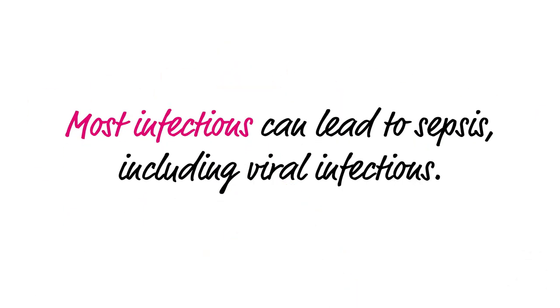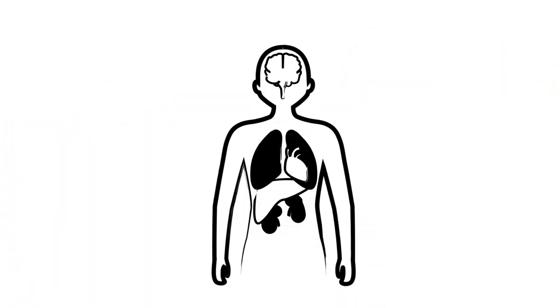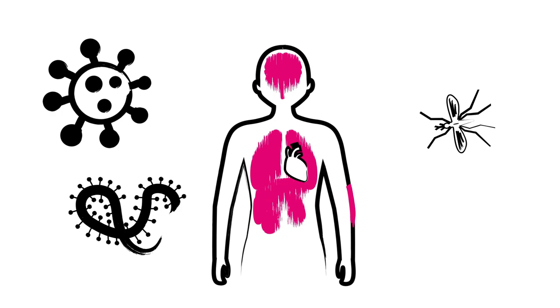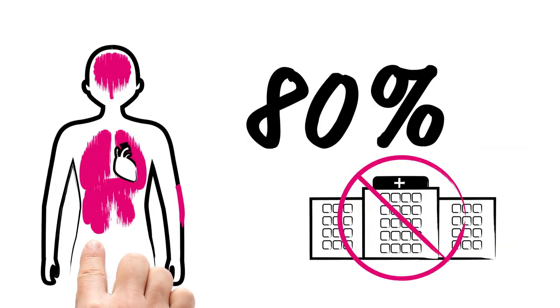Most infections can lead to sepsis, including viral infections. Among them are common infections such as pneumonia, urinary infections, infections in the abdomen, skin or wound infections, or meningitis. Seasonal flu, COVID-19, malaria, dengue and yellow fever, and Ebola may all result in sepsis. More than 80% of infections leading to sepsis are contracted outside of a hospital.